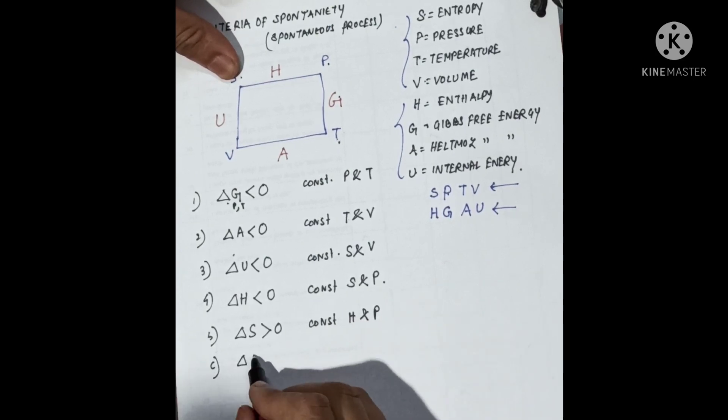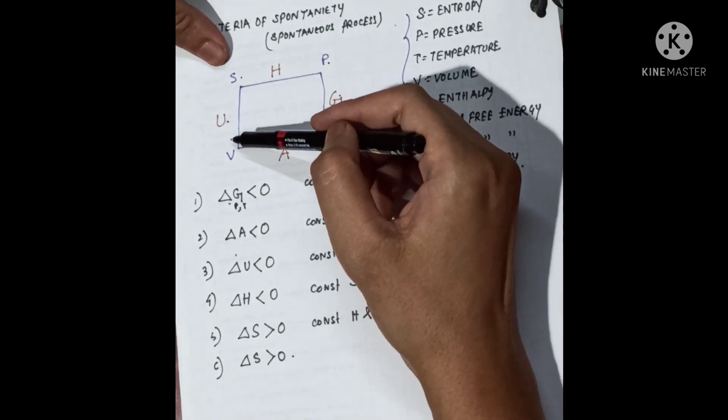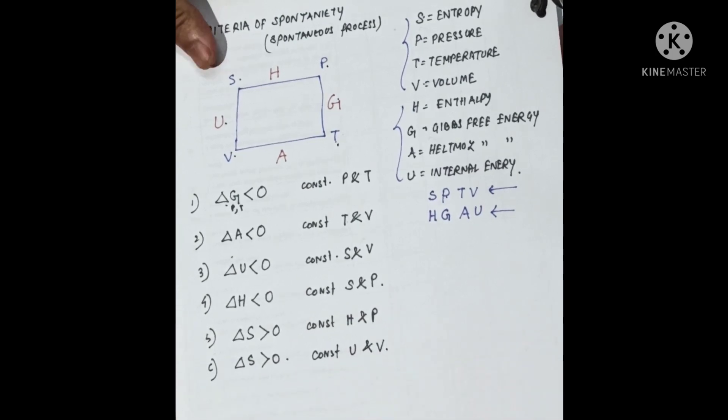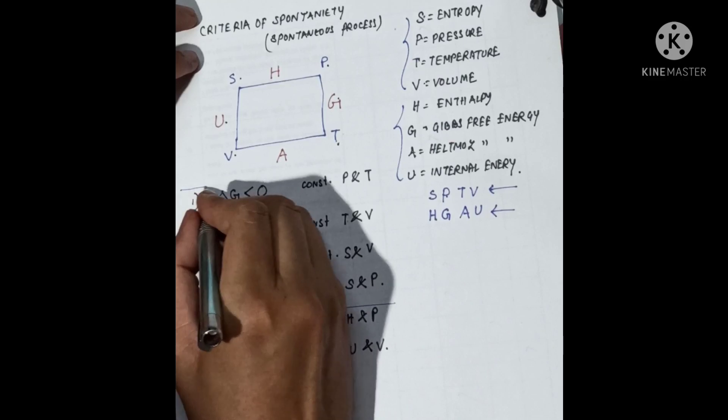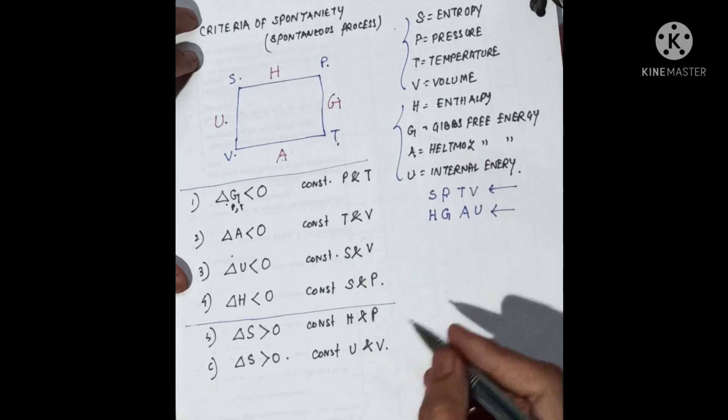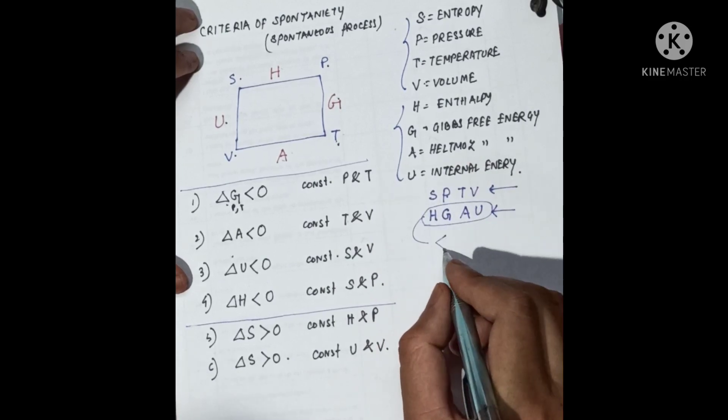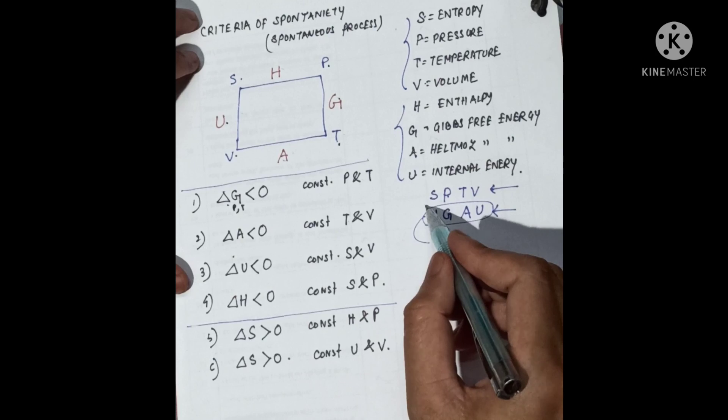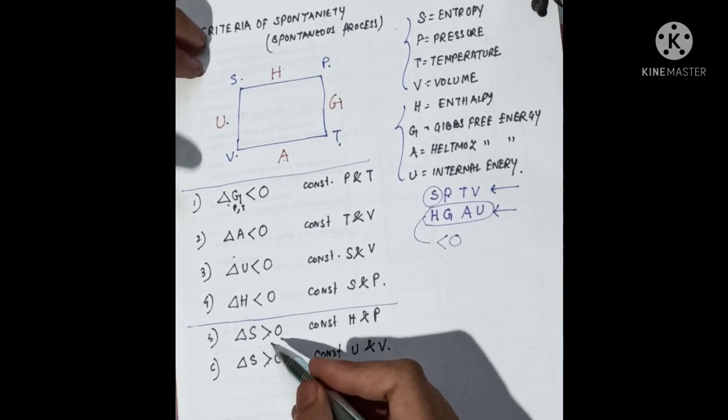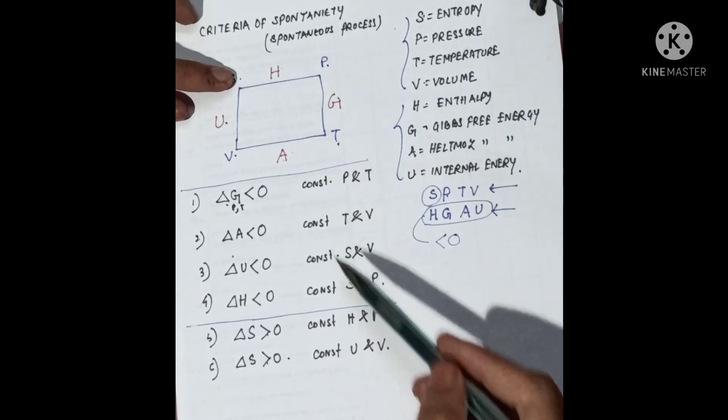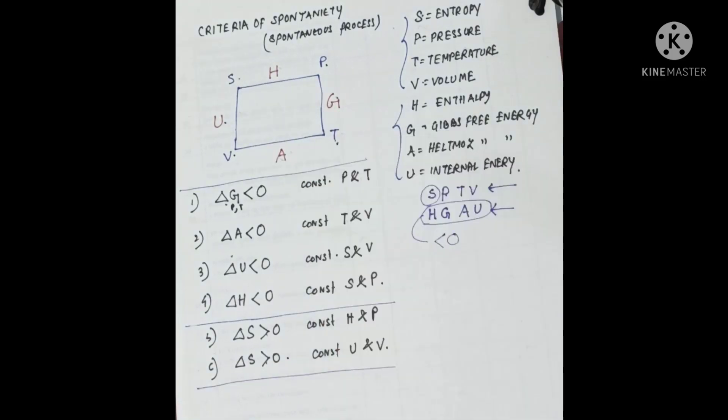The sixth condition is also the same: delta S greater than zero at constant U and V. We can classify the conditions into two types. The first category is less than zero: Z, A, U, and H. From this, you can take out the conditions of less than zero at some constant condition from this diagram. And the last condition is S: delta S greater than zero. For S, the conditions of constant are taken from this. At constant H and P, and U and V. The sequence will be useful for you.